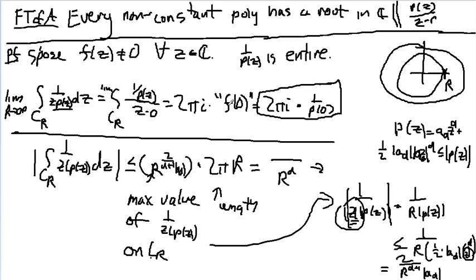Great. If I take the limit, it's going to end up not changing things. But let's just look at this integral in a different way. This integral I can bound by taking the maximum value of the integrand times the length of the arc. The length of the arc is just 2 pi r. And I was able to bound this by 2 over r to the d plus 1 times the modulus of a sub d.